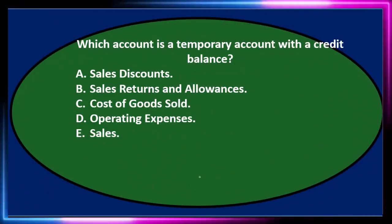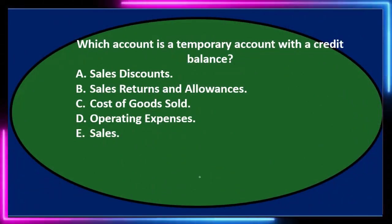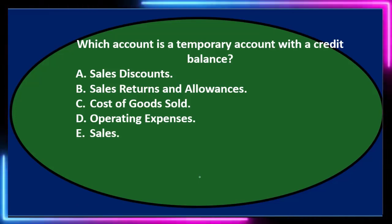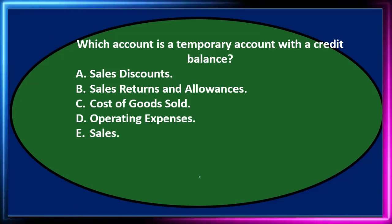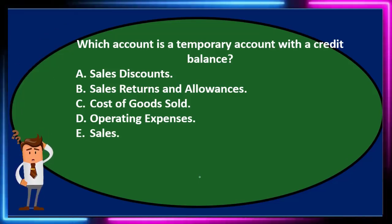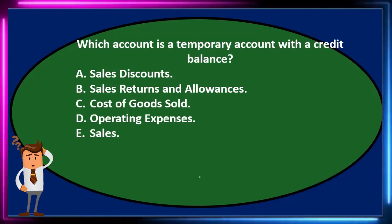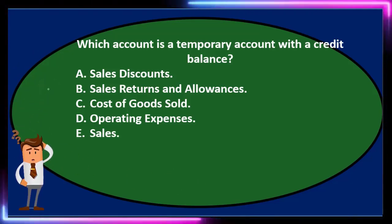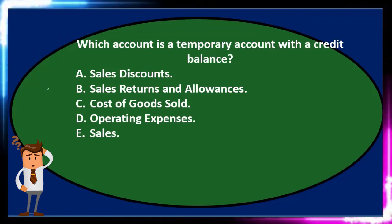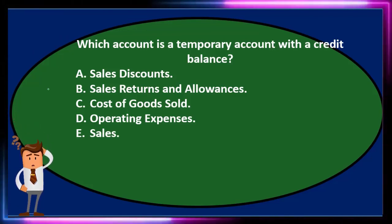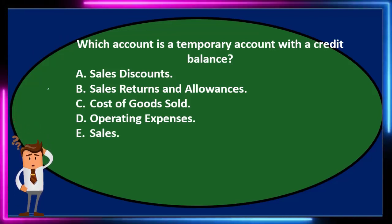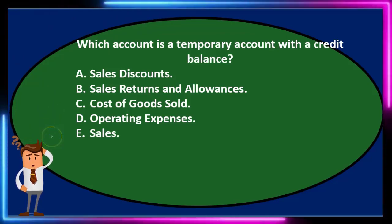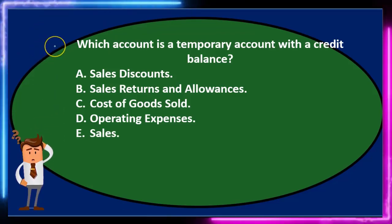In this presentation we will take a look at multiple choice questions related to a merchandising company. First question: which account is a temporary account with a credit balance? A) sales discount, B) sales returns and allowances, C) cost of goods sold, D) operating expenses, or E) sales.